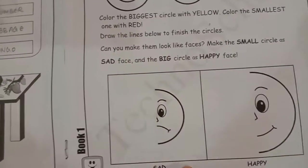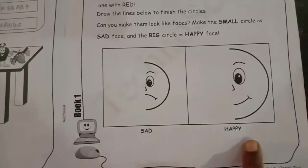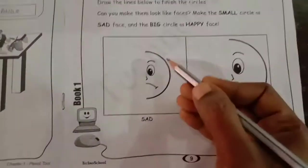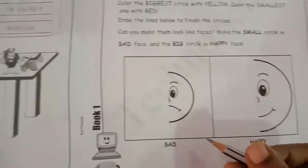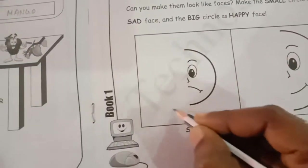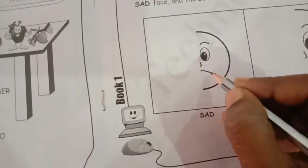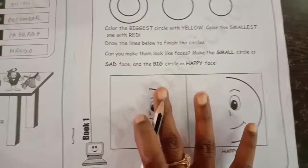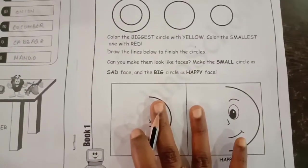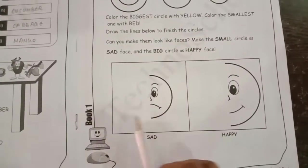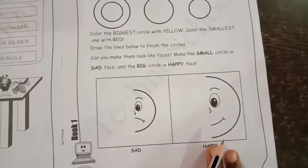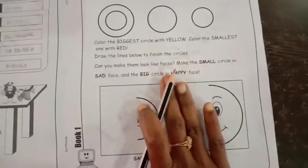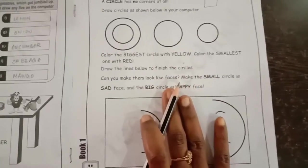Can you make the circles look like a face? Make the small circle a sad face and the big circle a happy face. We already have two boxes — one for a sad face and one for a happy face. Complete the drawings by yourself.